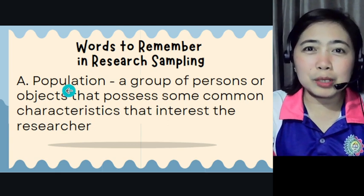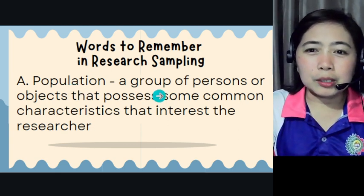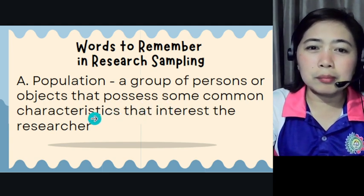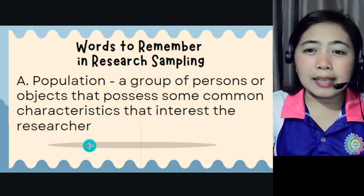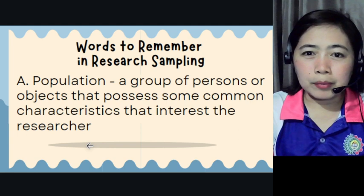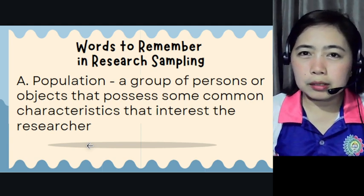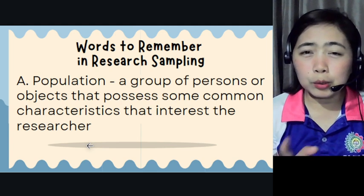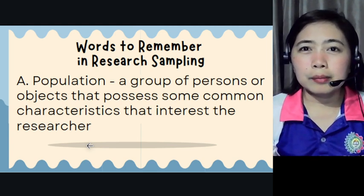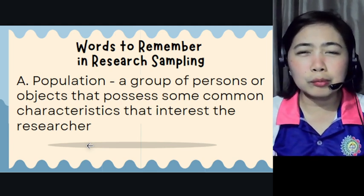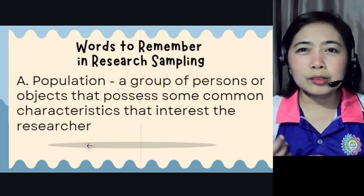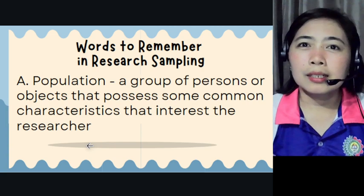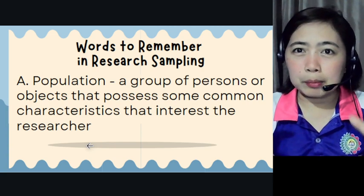We have the word population. It is a group of persons or objects that possess some common characteristics that interest the researcher. When you begin or conduct a study, you already have a focused or intended population — a group or population where you have noticed a problem or want to find a solution.